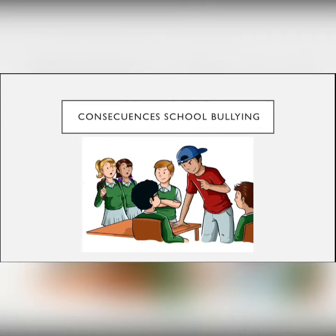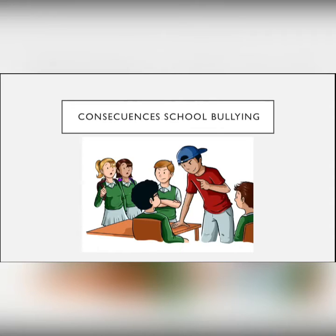Consequences of school bullying. The emotional consequences of school bullying include stress, insecurity, attachment issues, hyperactivity, negativity, low self-esteem, depressive symptoms, suicidal ideas and attempts. Number two, physical consequences: translating to irreversible injuries in extreme cases with fatal results.